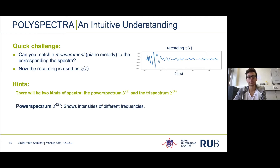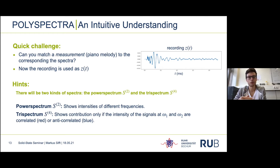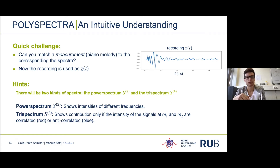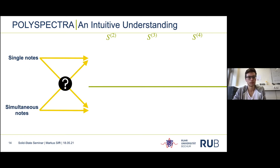I will display the usual power spectrum, also called S2 because it's a second-order spectrum, and one of the higher order spectra: the tri-spectrum, also called S4. The hints are that the S2 shows the intensity of power at different frequencies, while the S4 is two-dimensional and shows a contribution only if the intensities of the signal at ω₁ and ω₂ are correlated — shown in red — or anti-correlated — shown in blue. Hence I will also refer to S4 as the correlation spectrum.